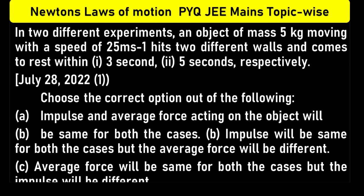In two different experiments, an object of mass 5 kg moving with a speed of 25 m/s hits two different walls and comes to rest — first within 3 seconds, second within 5 seconds. Choose the correct option: impulse and average force will be the same in both cases, impulse will be same but average force will be different, or average force will be same.